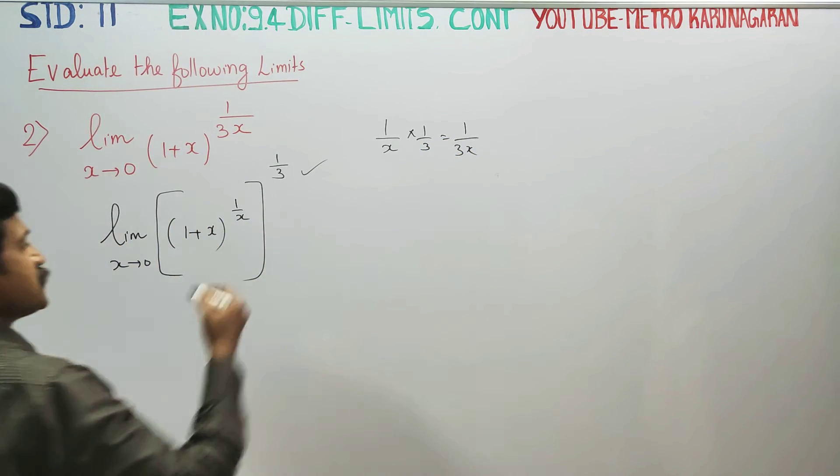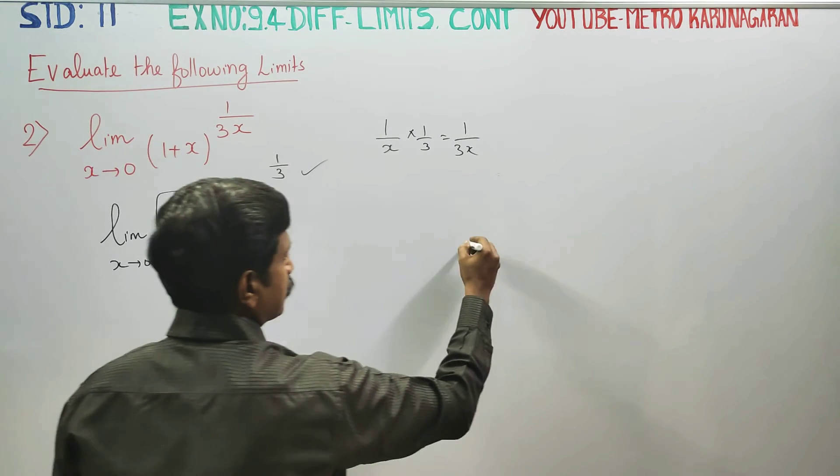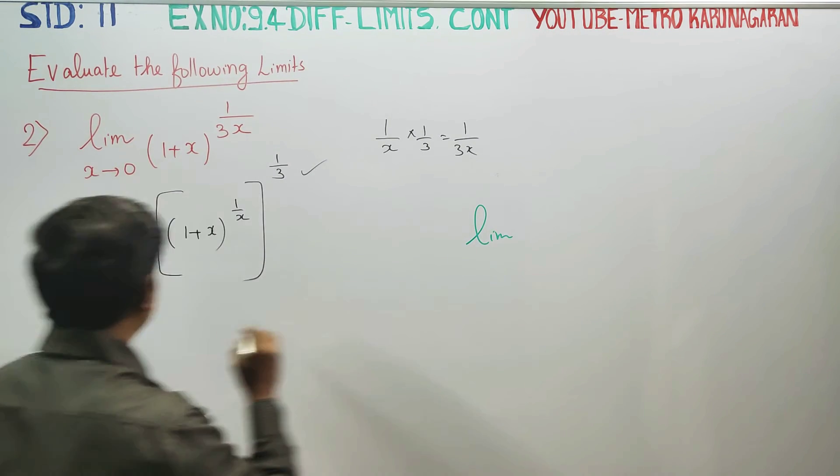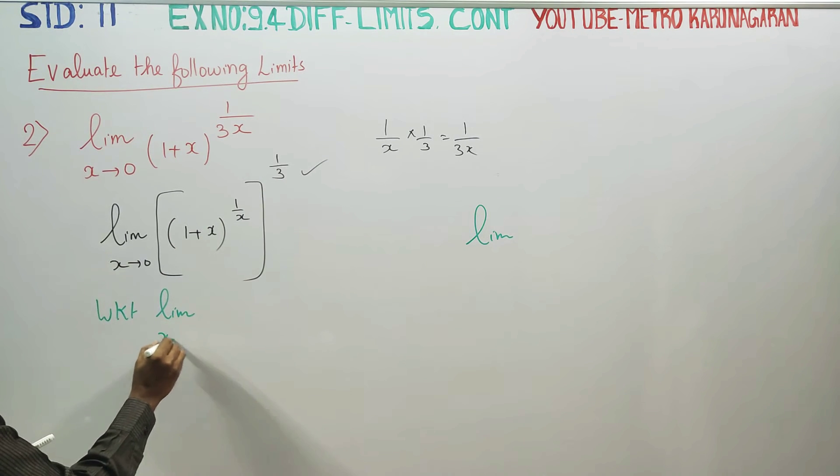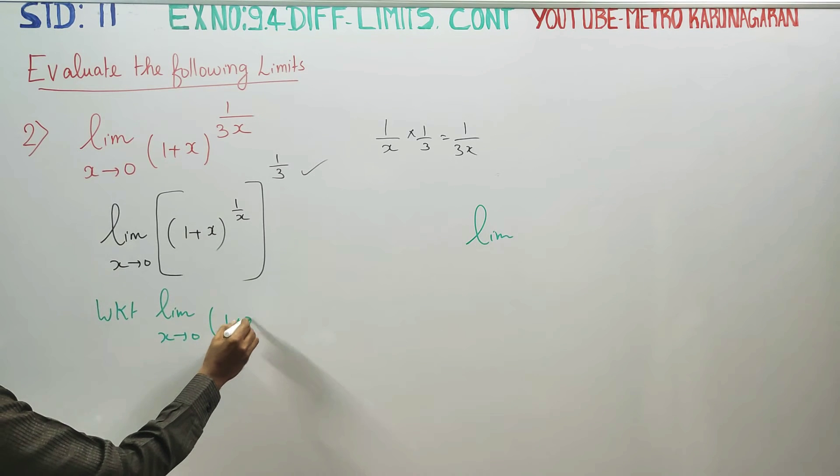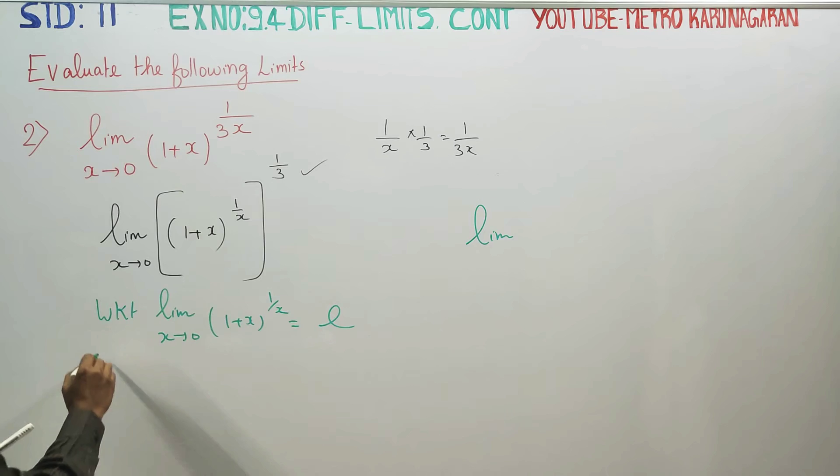There is a very important result. We know that limit x turns to 0, 1 plus x all power 1 by x is equal to e. This is the ready-made result.